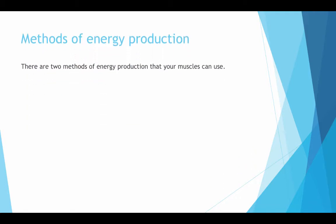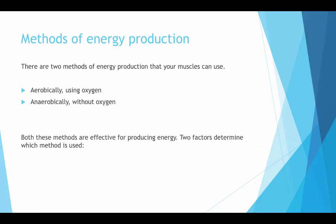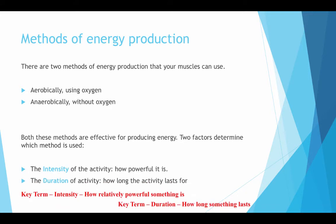Methods of energy production. There are two methods of energy production that your muscles can use: aerobically, using oxygen, and anaerobically, without oxygen. Both these methods are effective for producing energy. Two factors determine which method is used: the intensity of the activity — how powerful it is — and the duration of the activity — how long it lasts. Key terms: intensity — how relatively powerful something is; duration — how long something lasts.